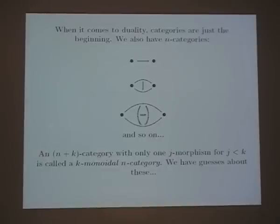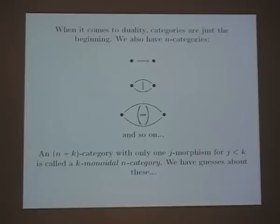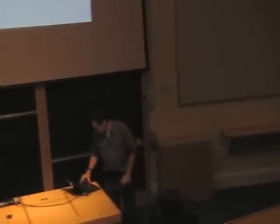When it comes to duality, categories are just the beginning — in addition to categories you have 2-categories and 3-categories and so on. You can look at an (n+k)-category that's boring at the bottom k levels, think of it as a special n-category, and call it a k-monoidal n-category. There's a conjecture about what these gadgets look like, which I call the periodic table. As you march down one of these columns, you get structures that are more and more commutative.